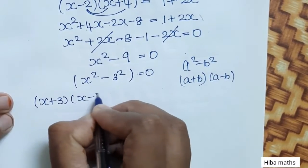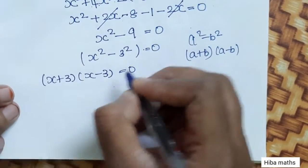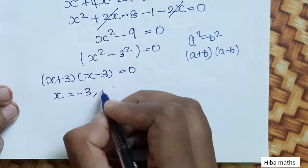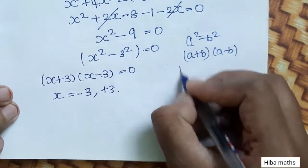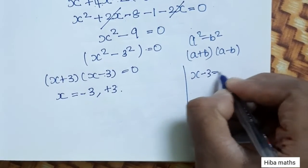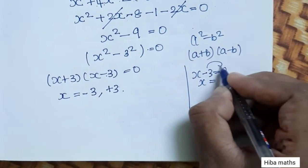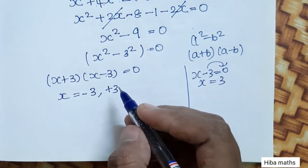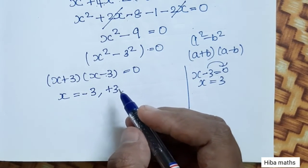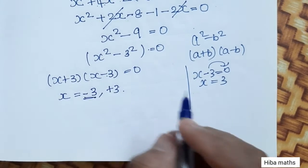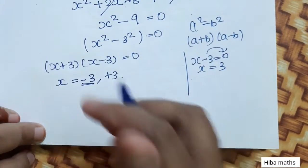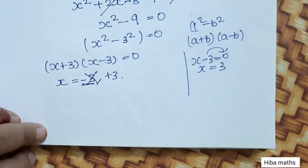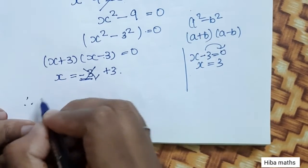So x plus 3 times x minus 3 is equal to 0. Therefore x is equal to plus 3 or minus 3. Since age cannot be negative, we cannot take x equal to minus 3.